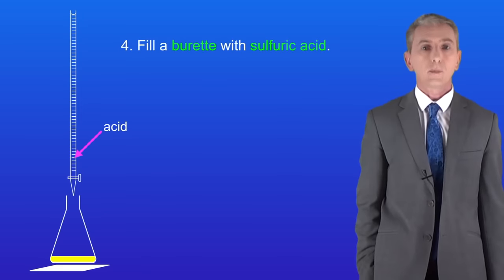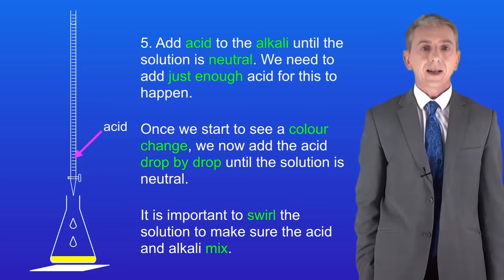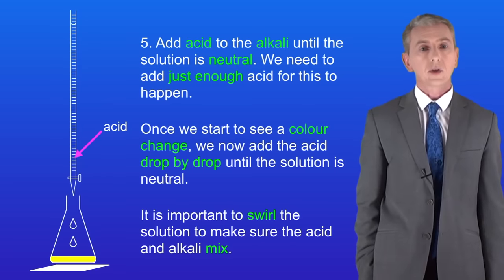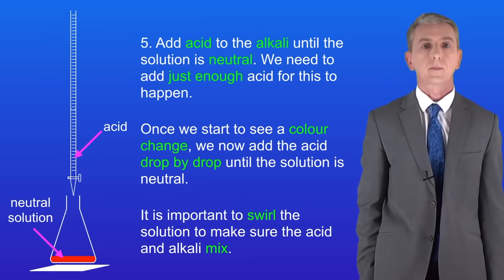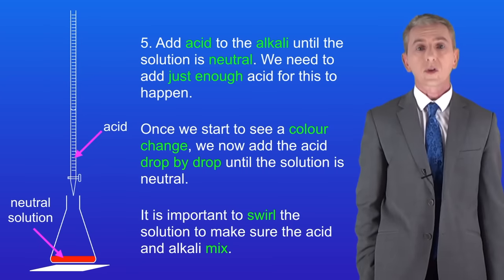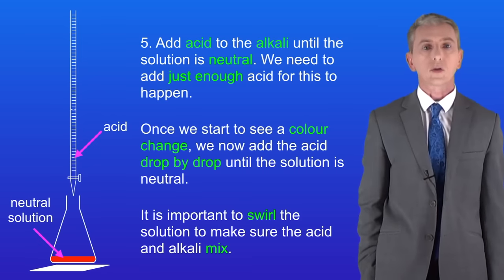We now fill a burette with sulfuric acid. Now we add acid to the alkali until the solution is neutral. With methyl orange the color change will be from yellow to permanently red. We need to add just enough acid for this to happen. So once we start to see a color change we now add the acid drop by drop until the solution is neutral.